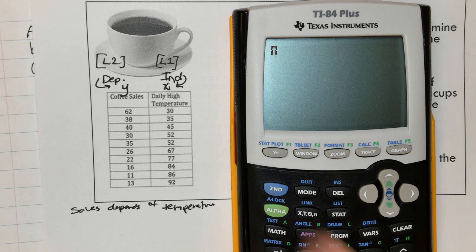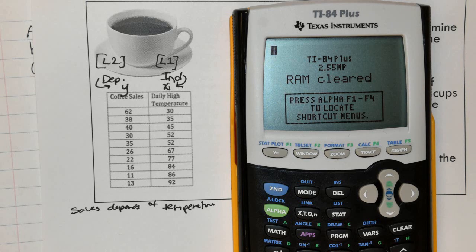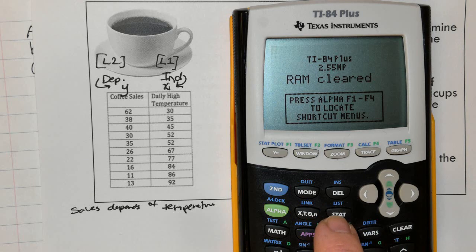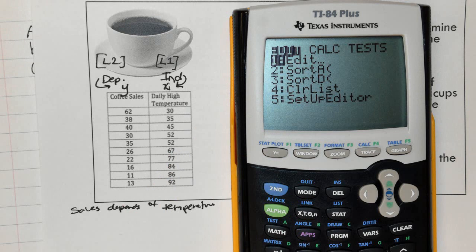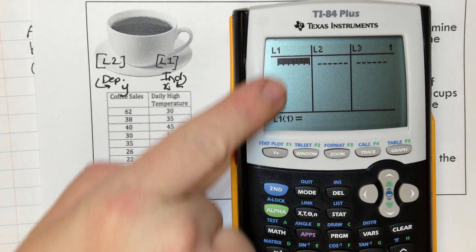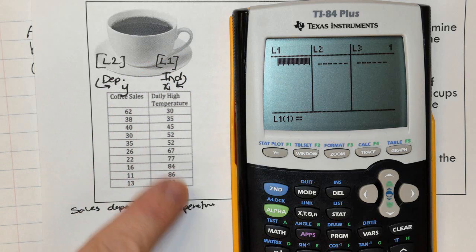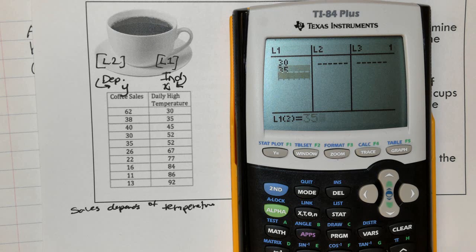We're going to start by going second plus. Now I'll try to go through this slowly so you can follow along on a calculator. Find the button that says stats, press enter. Edit will already be highlighted and press enter again. L1 followed by L2. Once again, L1 is your independent. So I'm going to put all these numbers in. Press enter after each data point is entered.